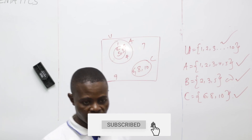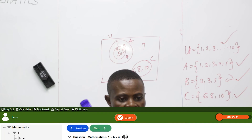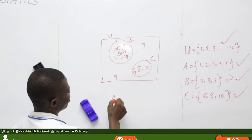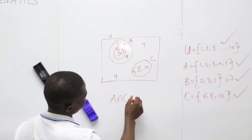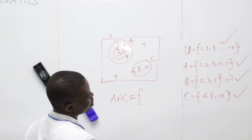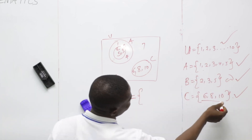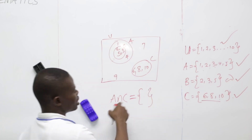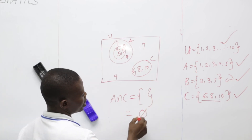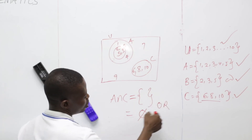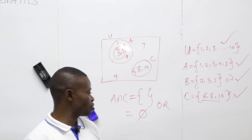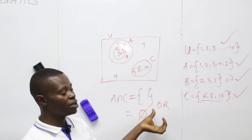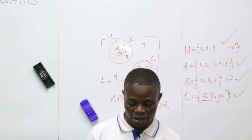The next question is: find A intersection C. A = {1, 2, 3, 4, 5} and C = {6, 8, 10}. Looking for common elements — there is no 6 in A, no 8 in A, no 10 in A. Meaning A intersection C is the empty set. So when writing your solution, you either use the phi symbol or empty braces to represent the empty set. That is the end of this topic for Set Theory Part 1.